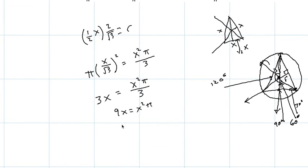this is going to become 9x equals x²π. And then from here, we get that 9 equals x times π. And so therefore, x equals 9/π.